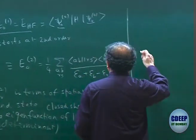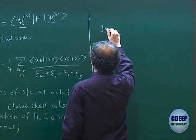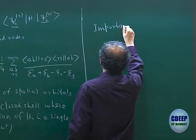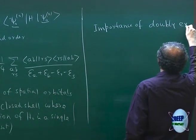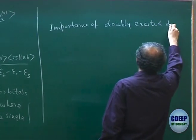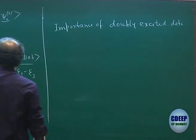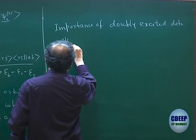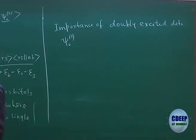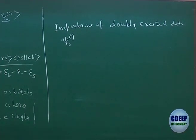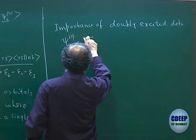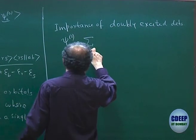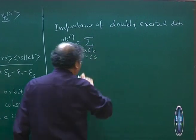One of the things we have seen is of course the importance of the doubly excited determinant. In the process of getting E naught 2, we first got psi 0,1 — the first-order correction to the wave function. Psi 0,0 is psi Hartree-Fock, and psi 0,1 is a linear combination of all eigenstates of H naught except Hartree-Fock. Our first correction came from the doubly excited determinants.